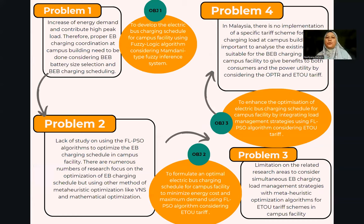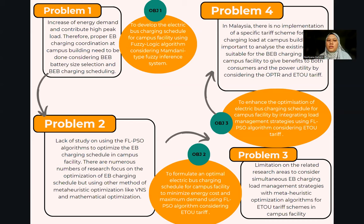This is my problem statement and objectives. Problem statement one: when we have an electric bus and we charge it from the grid, it will increase the energy demand and contribute to a high peak load. Therefore, we need a proper EB charging coordination at the campus building, considering battery size selection and electric bus charging scheduling. This establishes objective one: to develop the electric bus charging schedule for campus facility using fuzzy logic algorithm, considering the Mamdani-type fuzzy inference system.